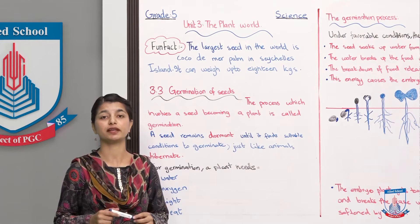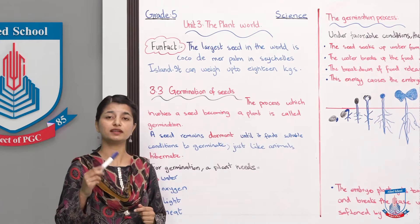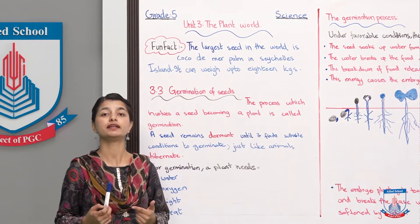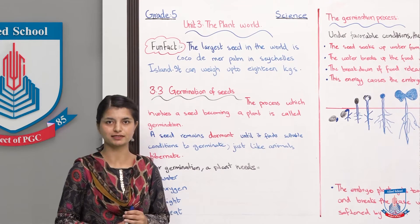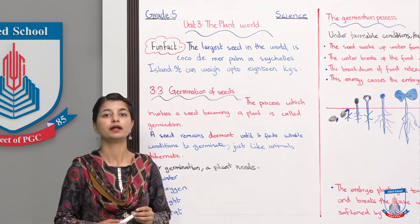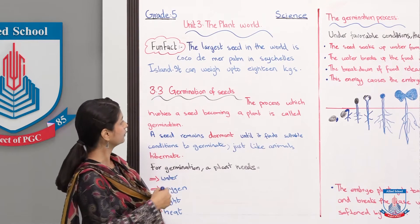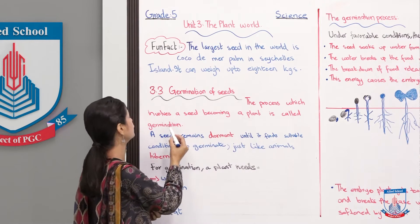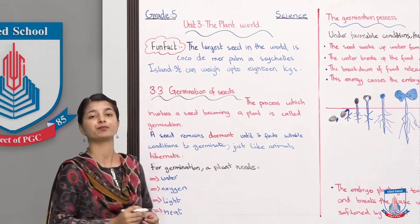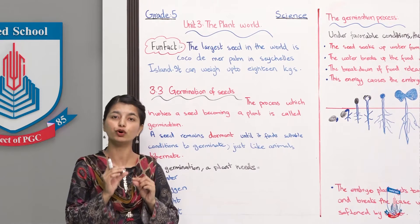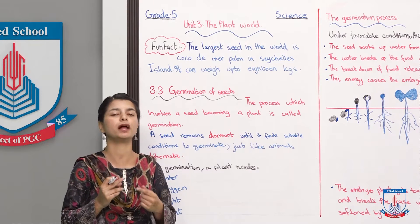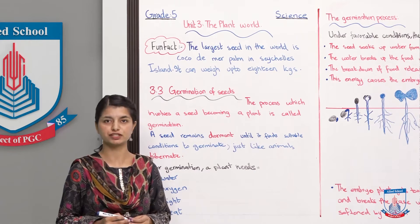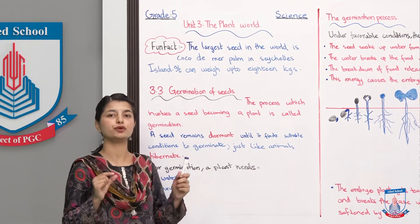Today we are going to discuss what we have been repeatedly using — germination — and what is the whole process of germination. The process which involves a seed becoming a plant is called germination. I have told you that the growing of a seed, the becoming of a plant, is called germination, and now you have read the actual definition.